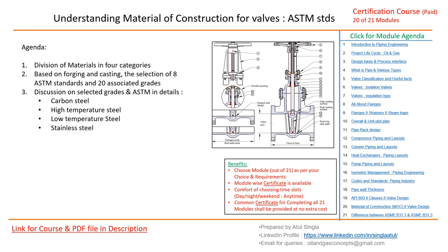Previously covered content includes API 600, API 60, impact testing clauses in B31.3 — each clause illustrated in detail — allowable stresses and how to use them in ASME B31.3, and pipe wall thickness calculation step by step. Links for all nine related videos are available in the description.